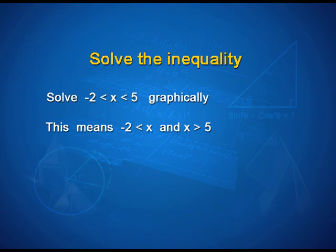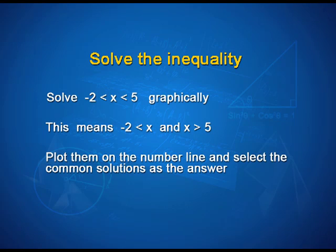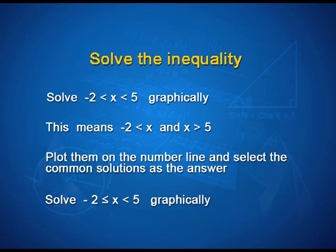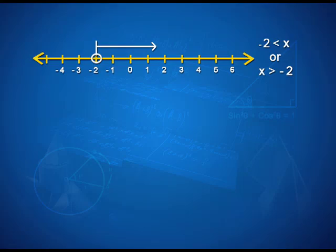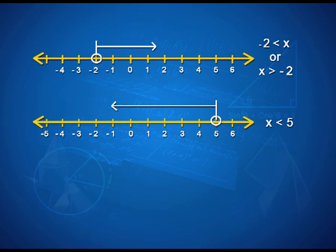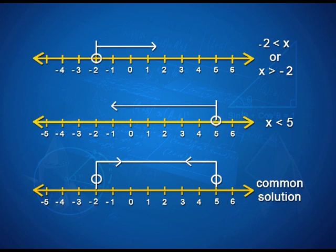Now let us solve the inequality -2 < x < 5 graphically. This means x > -2 and x < 5 simultaneously, so we take the common solution of both inequalities. Plotting x > -2 on the number line gives a hollow circle at -2 with the region marked to the right. Plotting x < 5 gives a hollow circle at 5 with the region marked to the left. The common region lies between -2 and 5, giving the solution -2 < x < 5.